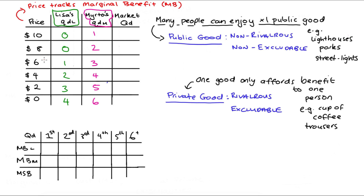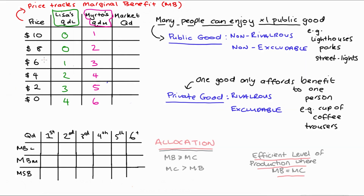Economists are really interested in the allocation of our scarce resources, and in particular we want to make sure that we always produce efficiently. This means we always produce where the marginal benefit is greater than or equal to marginal cost — we never want to produce where marginal cost is greater than marginal benefit. The sweet spot is where marginal benefit equals marginal cost: that's our efficient level of production, and it exhausts all levels where MB is greater than MC.